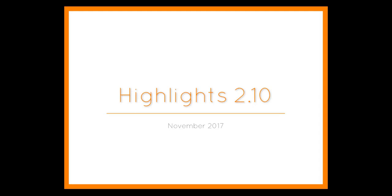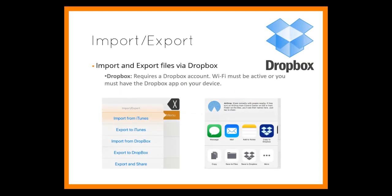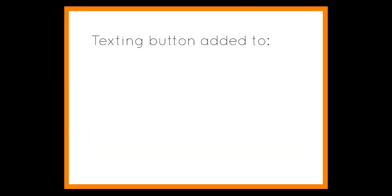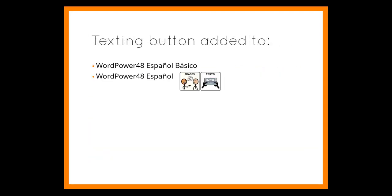Highlights of 2.10. Version 2.10 introduced the ability to save customized files to Dropbox, which requires a Dropbox account and an active Wi-Fi. WordPower 60 Español Básico was added to the WordPower family, and texting buttons were added to these files.